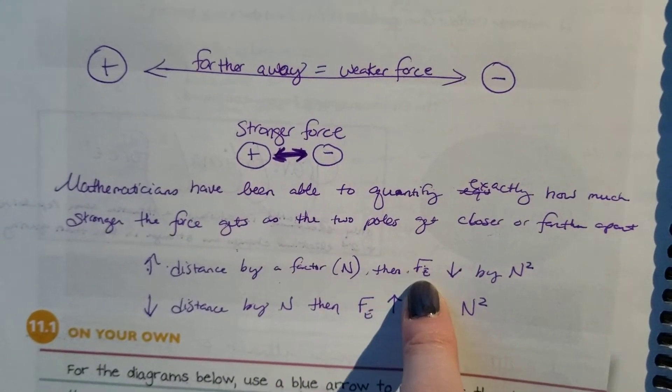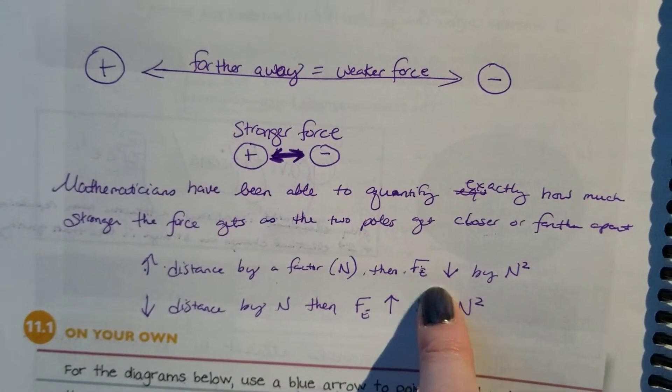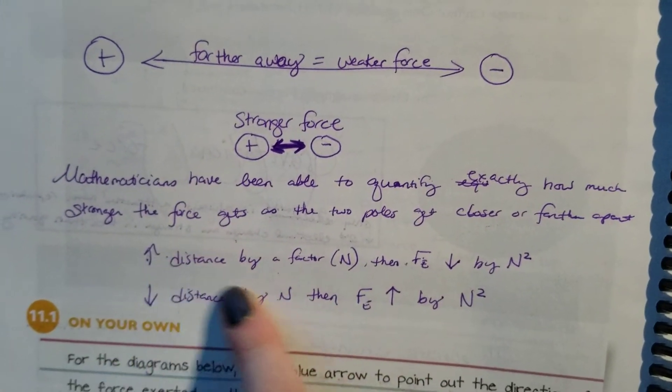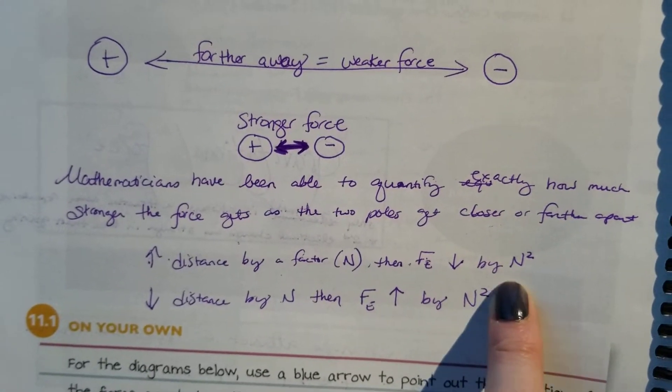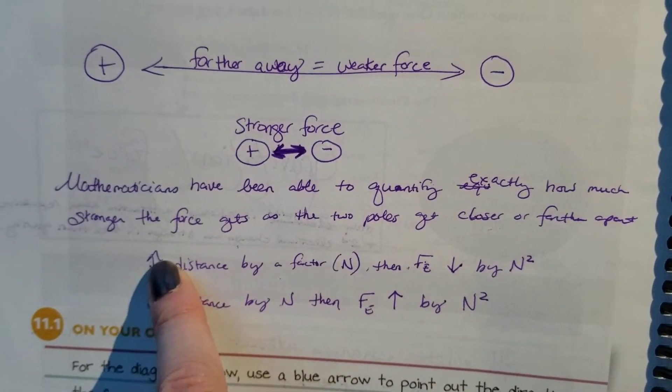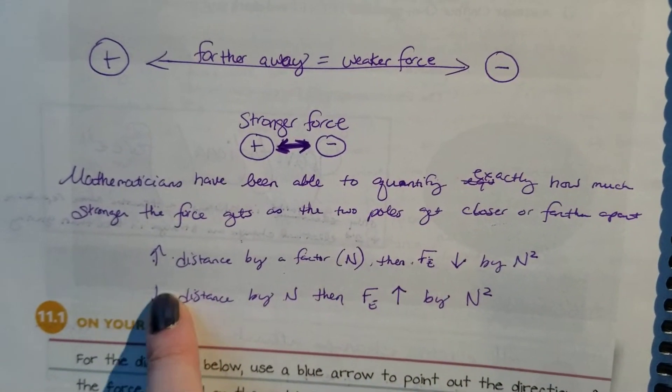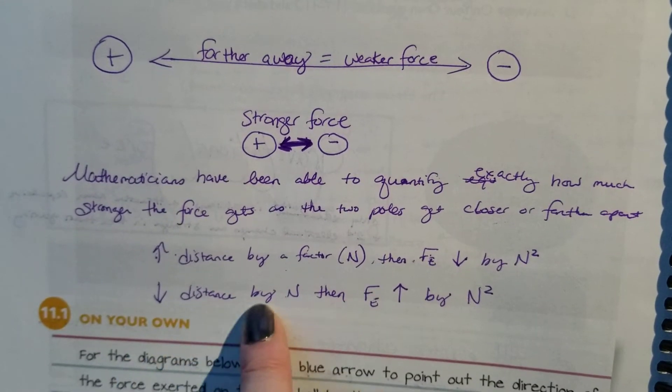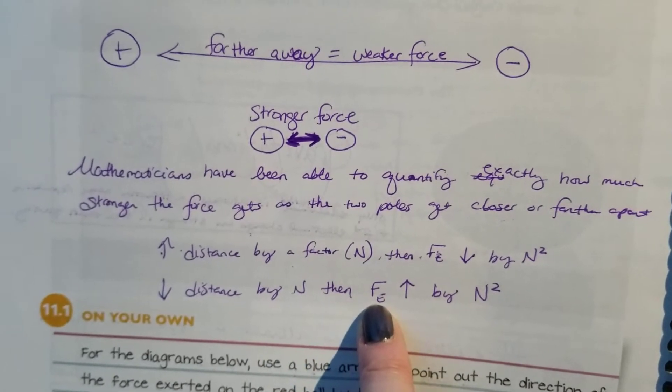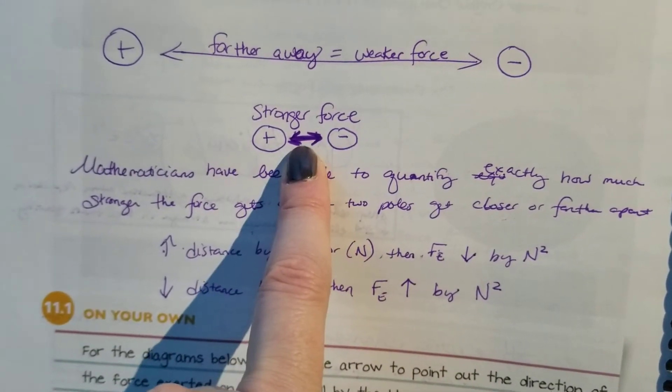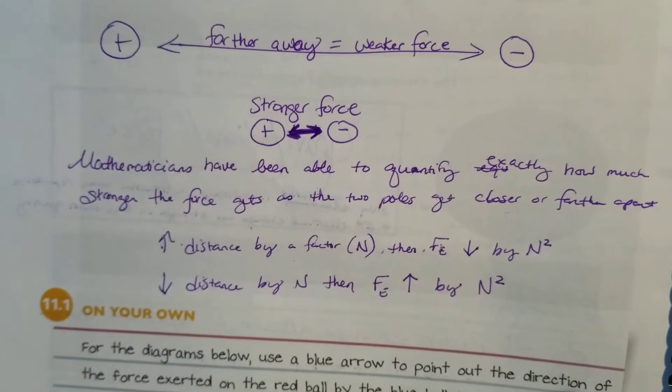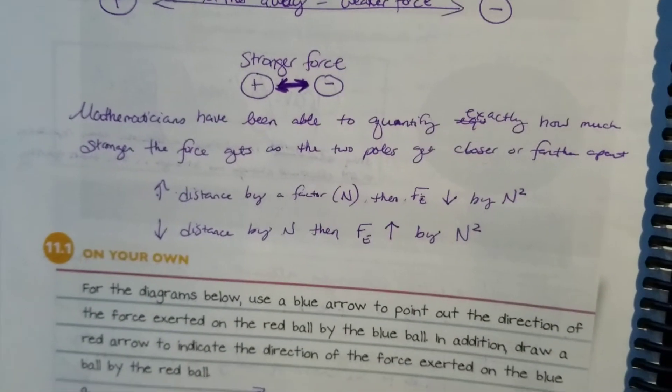We've got two fields here that want to attract because they're different. But the farther away they are, the weaker the force. The closer they are physically together, the stronger the force. Mathematicians have been able to quantify exactly how much stronger the force gets as the two poles get closer or farther apart. Increase the distance by a factor of n, then the electromagnetic force Fe decreases by n squared. As one goes up, the other one goes down. And likewise, the distance goes down, then the electromagnetic force increases by the same number squared.